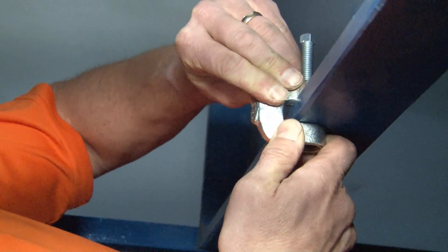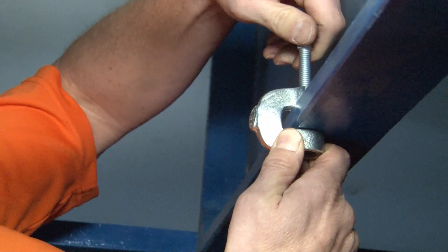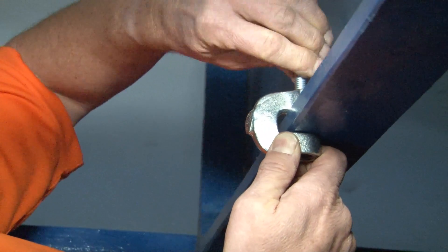Once it's secure on the beam where you want it to be, simply tighten the set screw against the beam with a pair of channel locks.